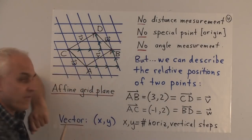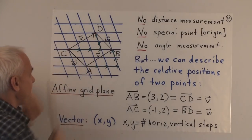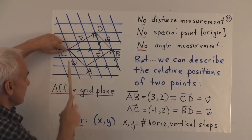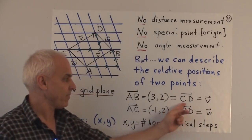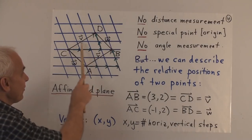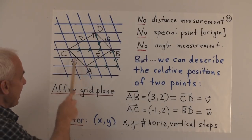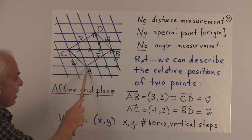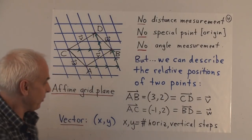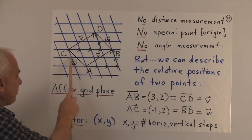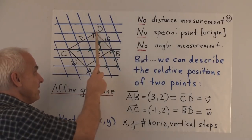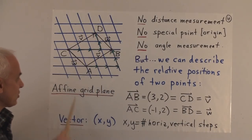The vector AB is encoded by this pair of numbers — the first representing the number of steps in one direction, the second how many steps in the other direction. Because the relative position from C to D is also three steps over and two steps up, these two vectors CD and AB are considered to be the same, and we give them a name — typically something like V with a little arrow on top. To get from A to C, we go one step in the negative direction and up two, so the vector AC is (−1, 2), and that's the same as vector BD.